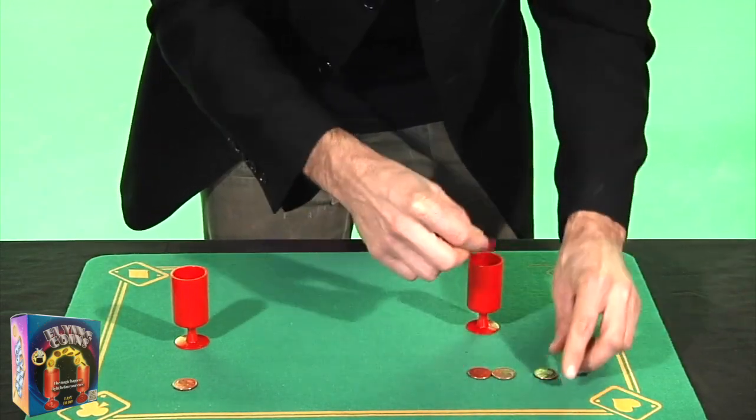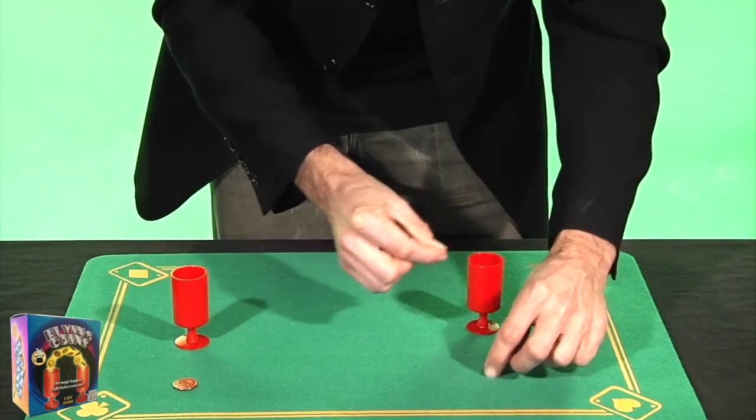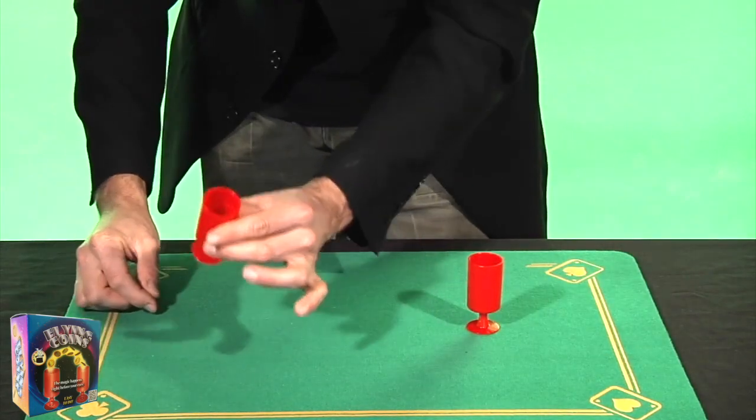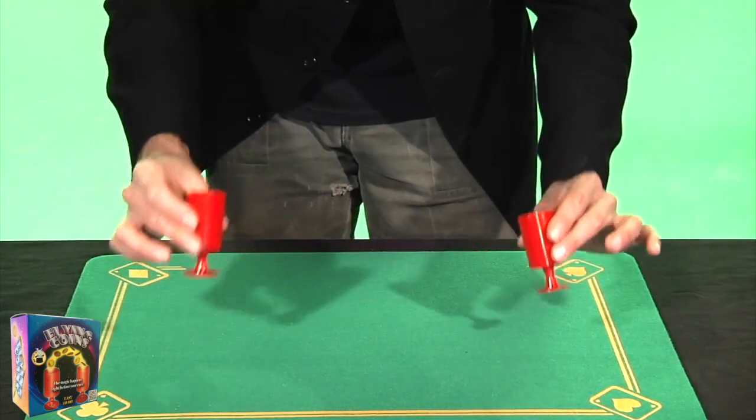So, here I have one, two, three, four, and five coins, and one coin left in this cup. So, one and five coins.